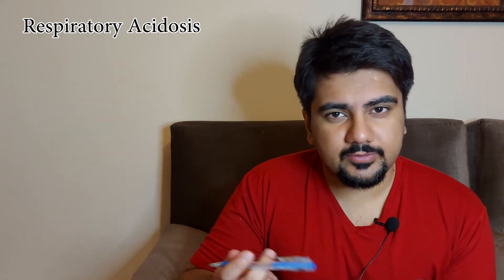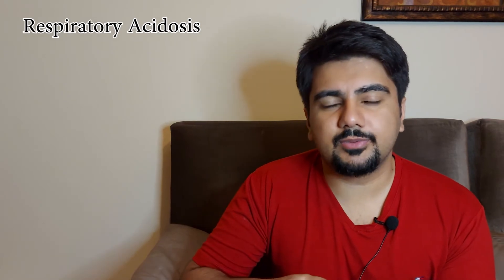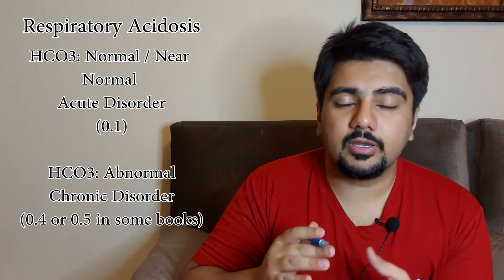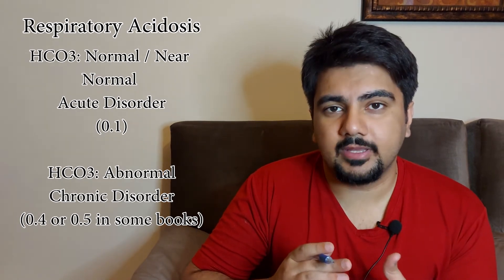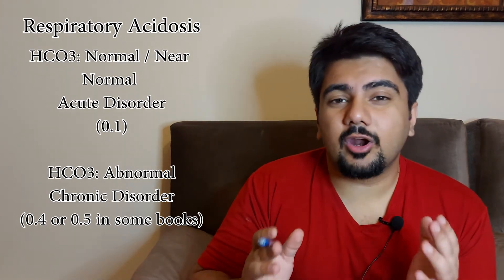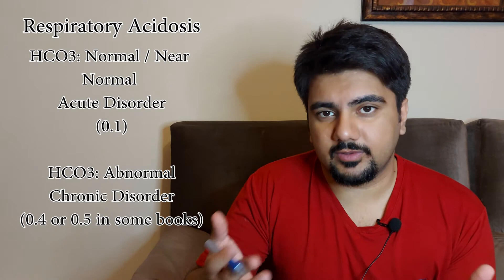Respiratory acidosis can be a little bit tricky in that it has an acute component and a chronic component. How do you tell the difference between the two? After looking at the pH and the pCO2, the next thing you look at is the bicarb. If the bicarb is normal or near normal, it means it is an acute respiratory disorder. If the bicarb is deranged, it means that this is a chronic respiratory disorder.